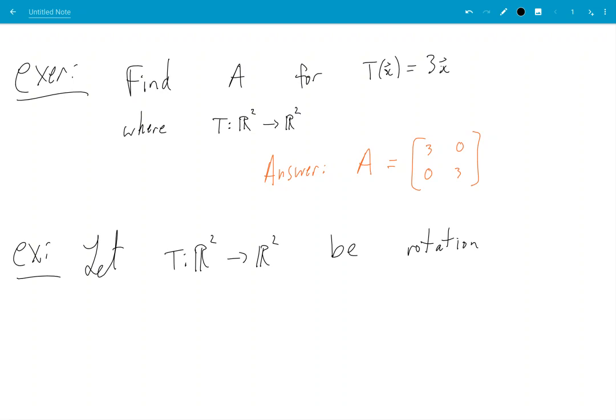Counter-clockwise by π over 6, followed by a vertical expansion by a factor of 2.